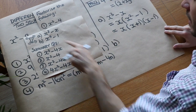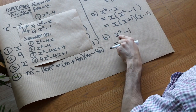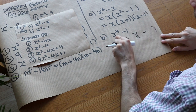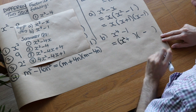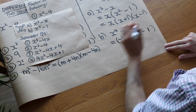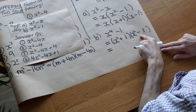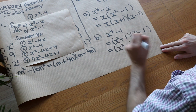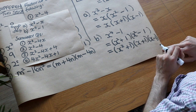Finally: x to the 4 minus 1. This is a difference of two squares, since x to the 4 is x squared all squared, and 1 is a square number. Two brackets give (x squared + 1)(x squared − 1). The first bracket, x squared + 1, is a sum of two squares and cannot be factorised. But x squared minus 1 is again the difference of two squares, factorising to (x + 1)(x − 1). The complete factorisation is (x squared + 1)(x + 1)(x − 1).